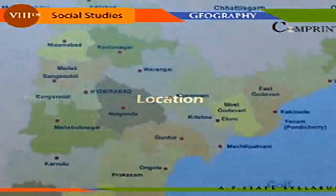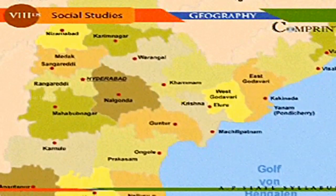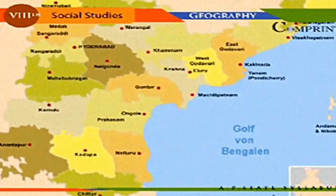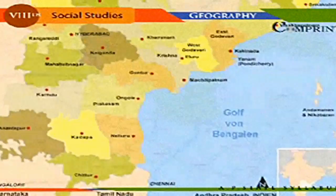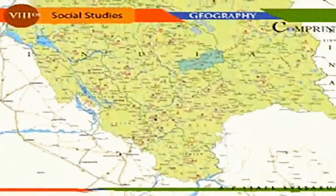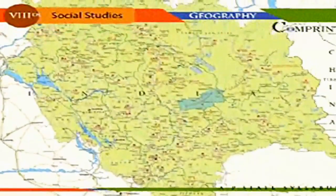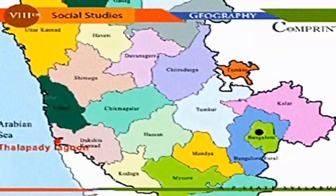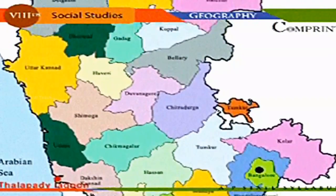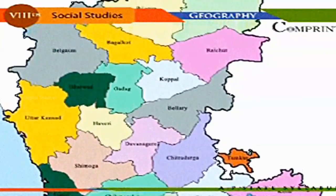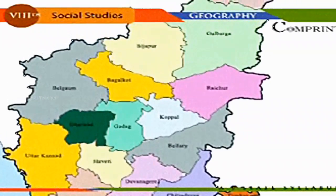Location. Andhra Pradesh is in the Indian Peninsula. To the north are the states of Chhattisgarh and Orissa. Tamil Nadu is on the south, Maharashtra on the northwest, Karnataka on the west, and the Bay of Bengal on the east. Andhra Pradesh has a long coastline of 972 km. There are 23 districts in Andhra Pradesh. Anantapur district is the biggest in area and Hyderabad district is the smallest.